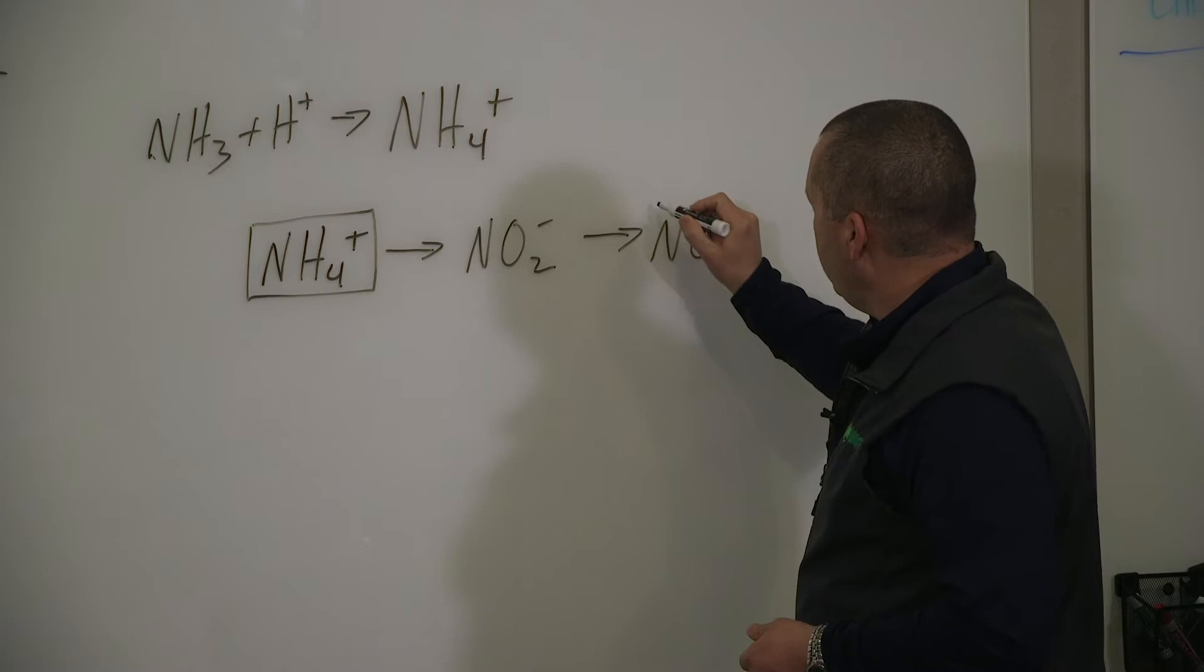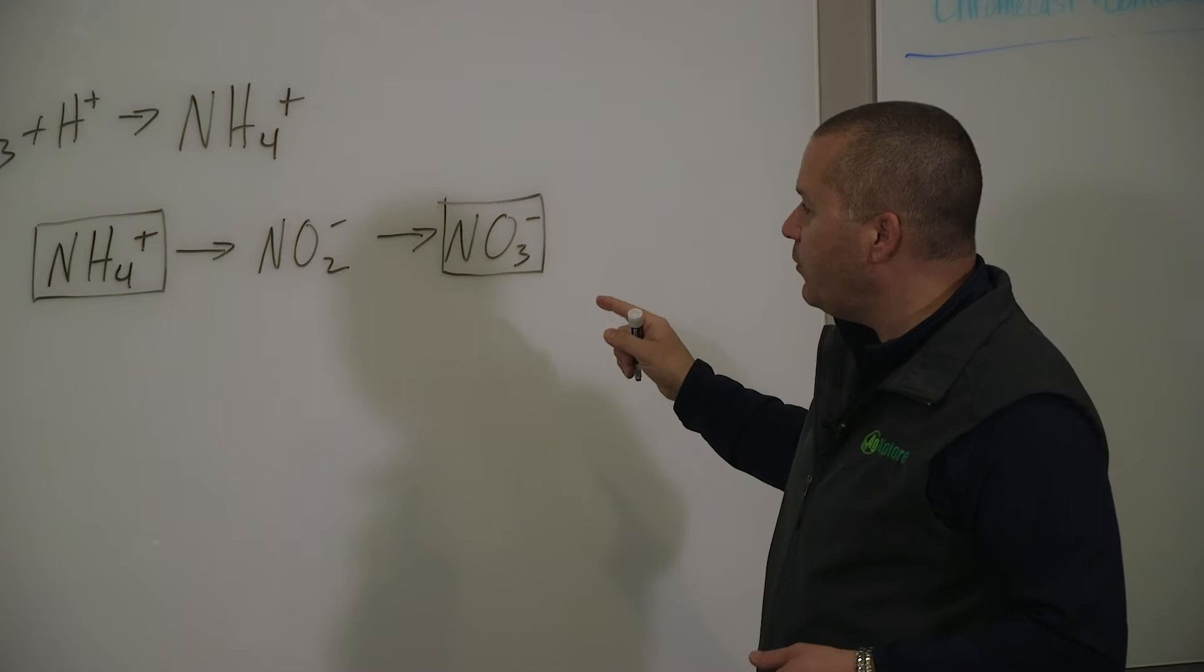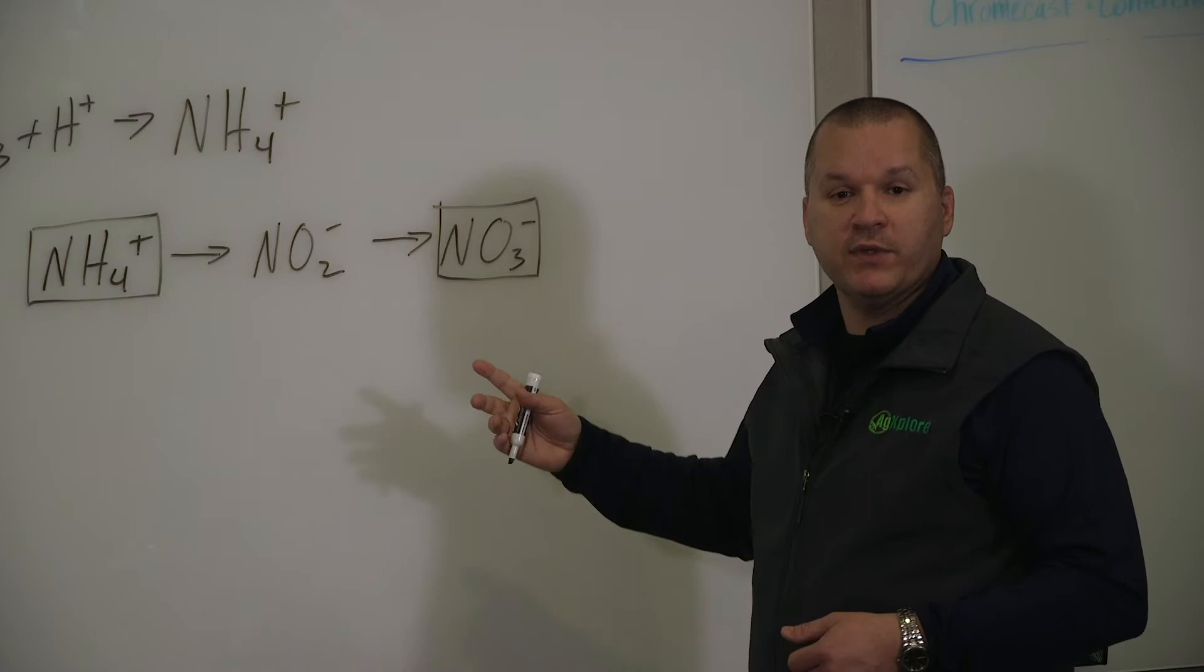The difference is this one is also plant available. That's key. It's a key takeaway I want you to remember. Ammonium NH4 plus and nitrate NO3 minus are the only two ways a plant can take up nitrogen. It cannot take up nitrite.